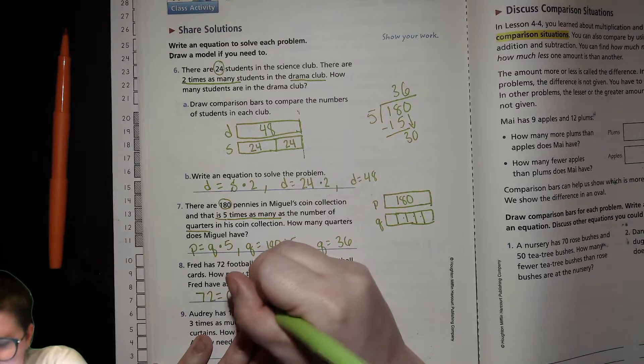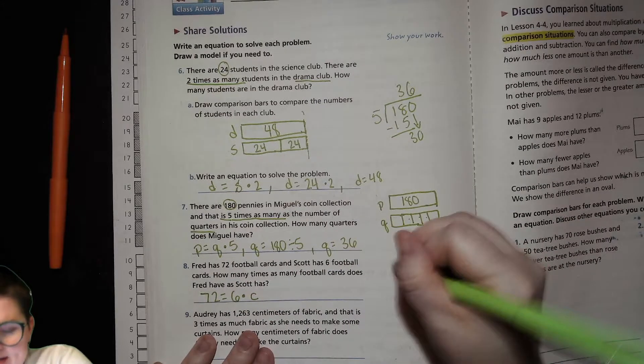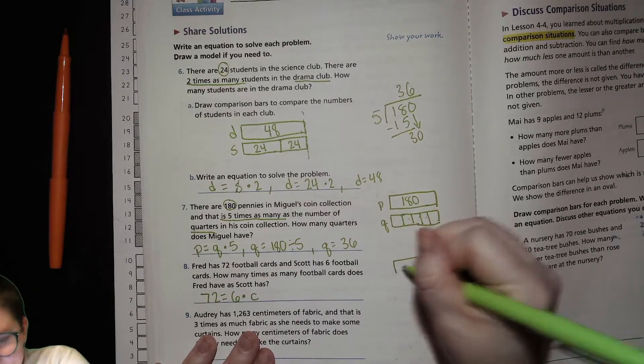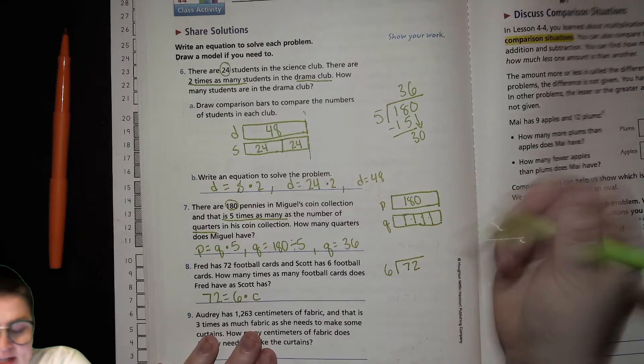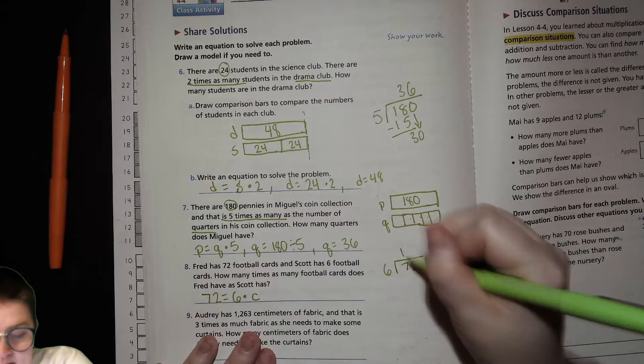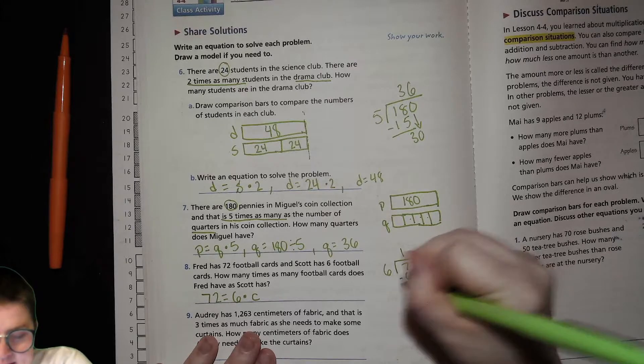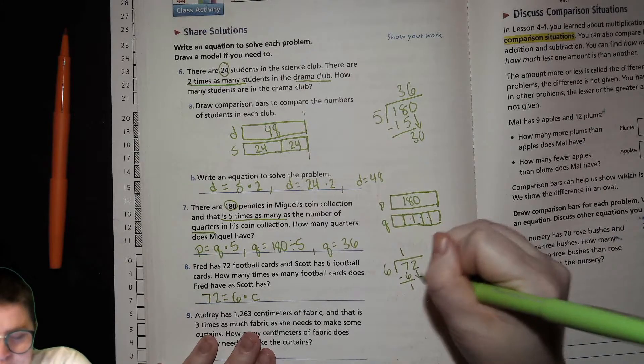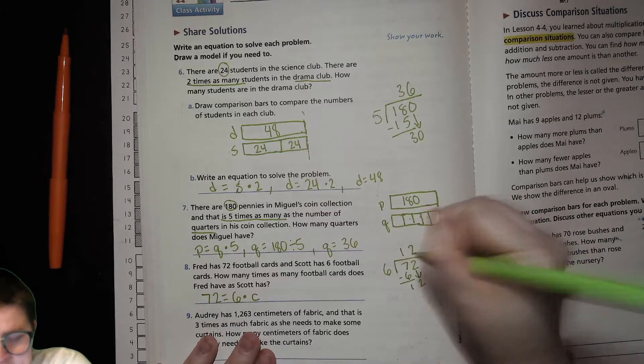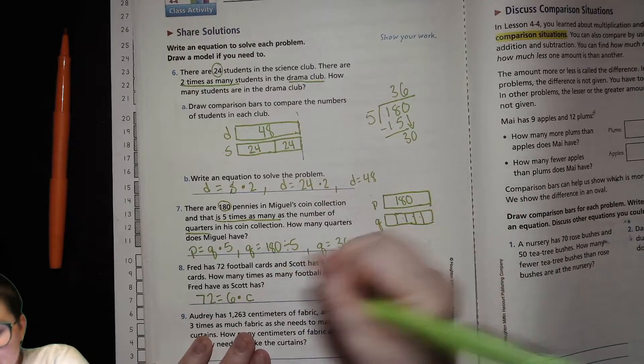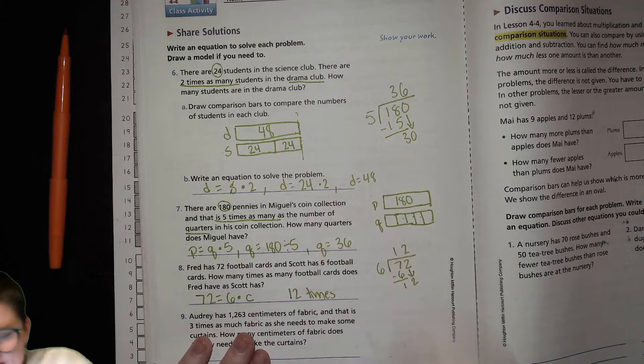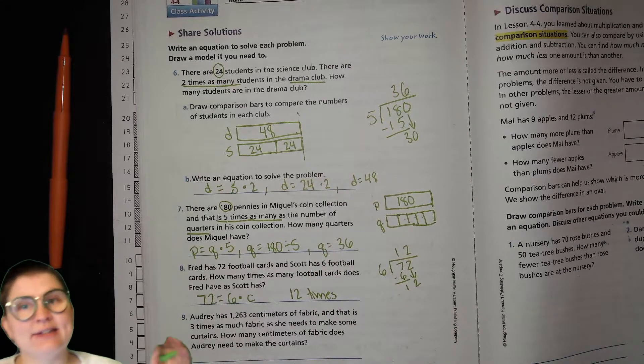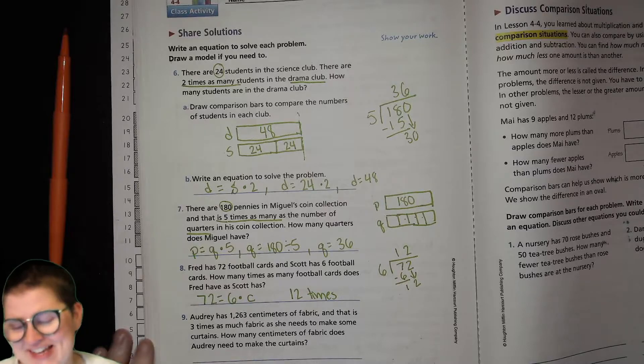Let's do C for cards. So then it's basically 72 divided by six. Six goes into seven once. Six. And two on down. And now you have 12. So six times 12. So it's 12 times. So Fred has 12 times as many cards as Scott has. That's basically what you're saying there.